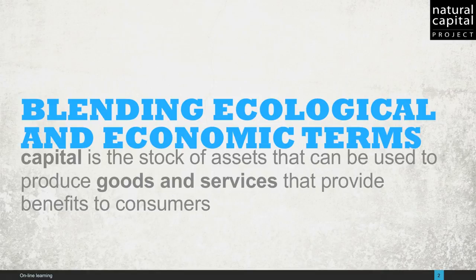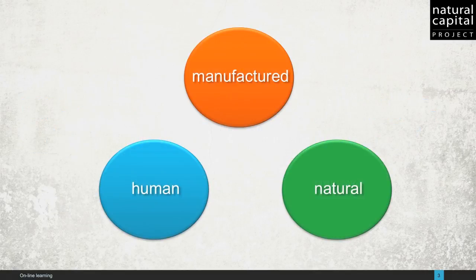Natural capital and ecosystem services represent a blending of ecological and economic terms. In economics, capital refers to the stock of assets that can be used to produce goods and services that provide benefits to consumers. Capital assets come in many forms, including manufactured capital — things like buildings and machines — human capital — things like education and experience — and natural capital, such as clean water and forests.